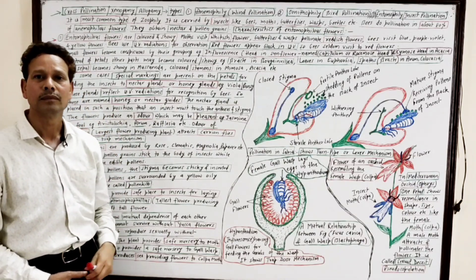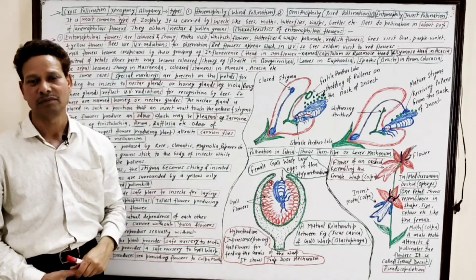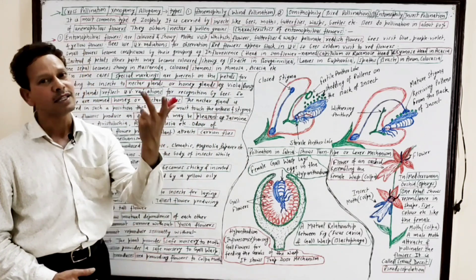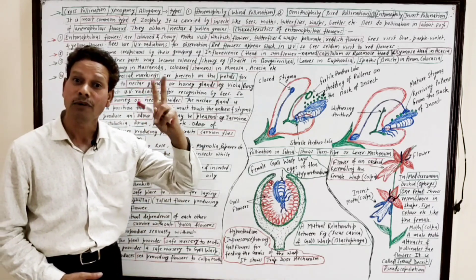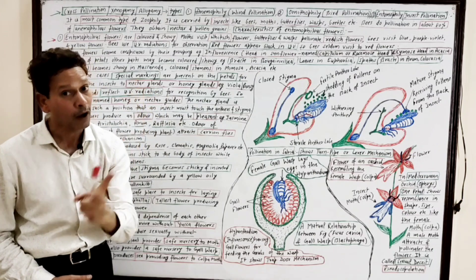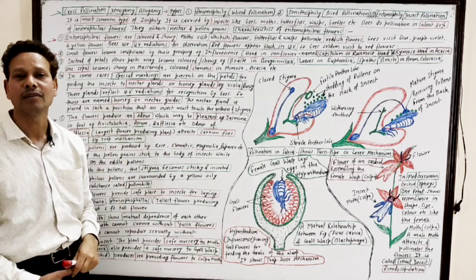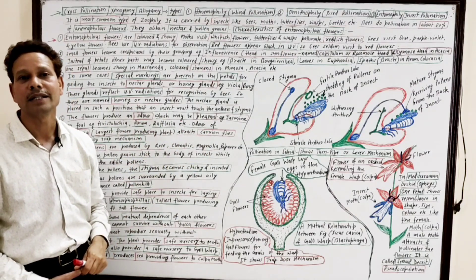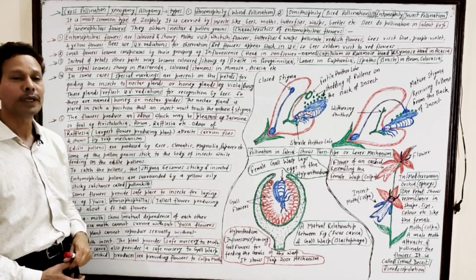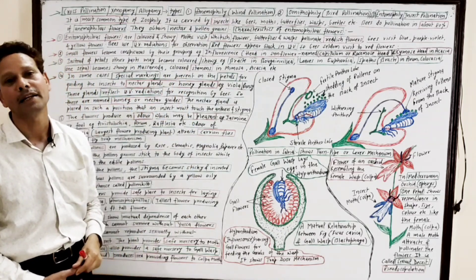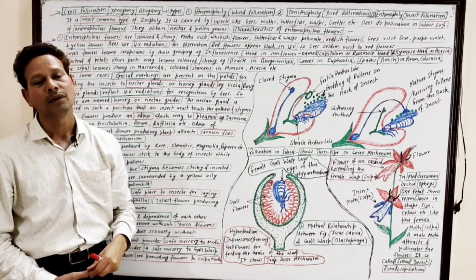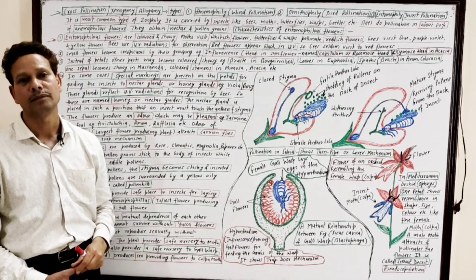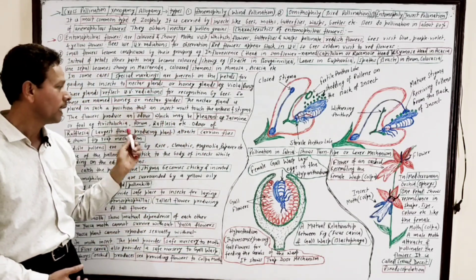Entomophilous flowers generally produce a characteristic odor. The odor may be pleasant, as in the case of jasmine, which pleases insects. But in some entomophilous flowers, the characteristic odor may be foul-smelling, as in the case of Rafflesia. Rafflesia produces a foul smell which attracts carrion flies. Similarly, in Aristolochia and Arum, the characteristic odor is foul-smelling, which attracts bees, house flies, and other flies.